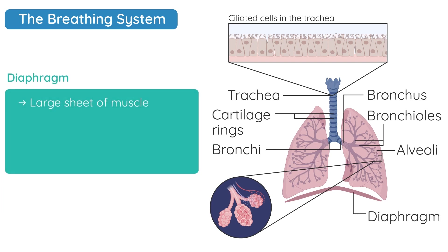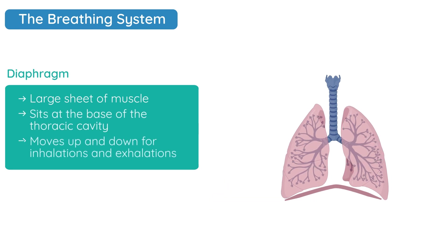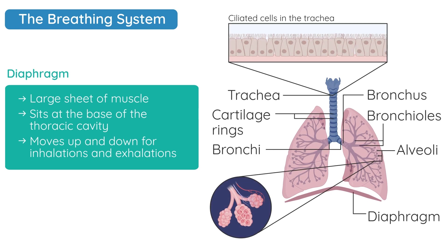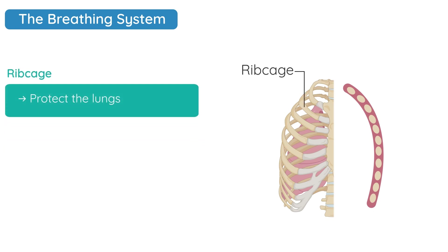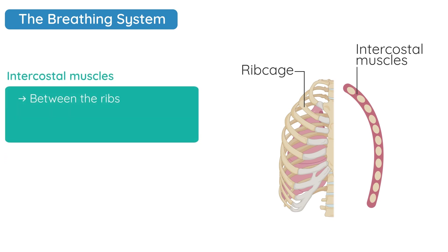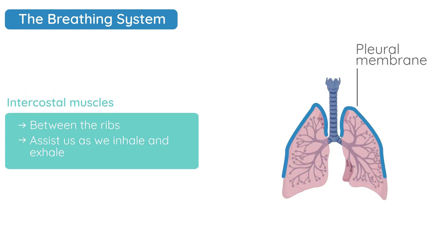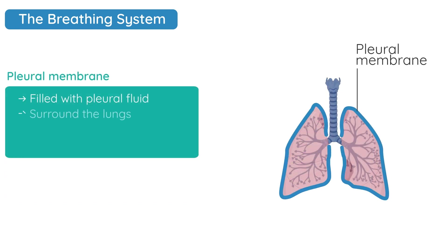The diaphragm is a large sheet of muscle which sits at the base of the thoracic cavity and it moves up and down for inhalation and exhalation. The lungs are surrounded by a series of bones called the rib cage, which protects the lungs. Between the ribs we have the intercostal muscles, which assist us as we inhale and exhale. The pleural membranes are membranes filled with pleural fluid that surround the lungs and prevent friction between the lungs and the rib cage.